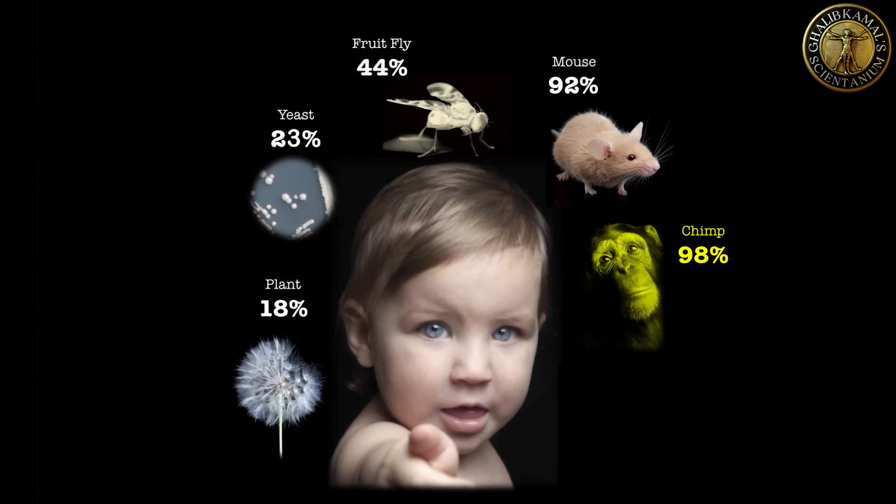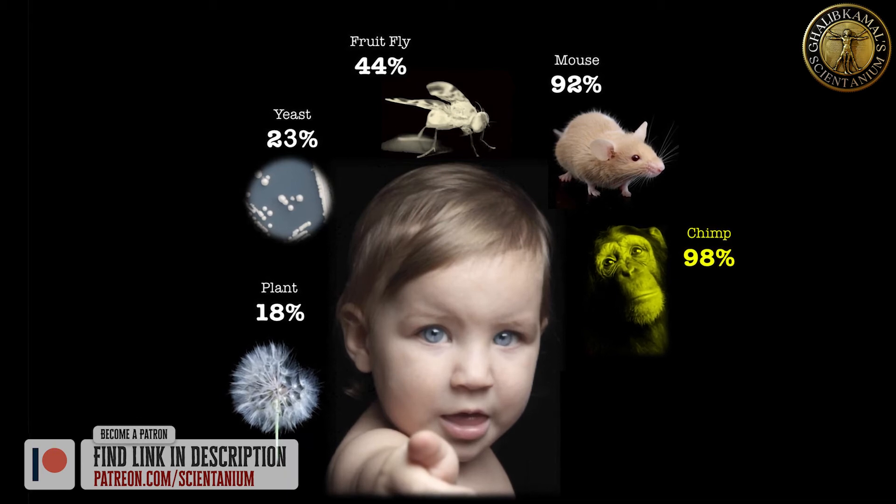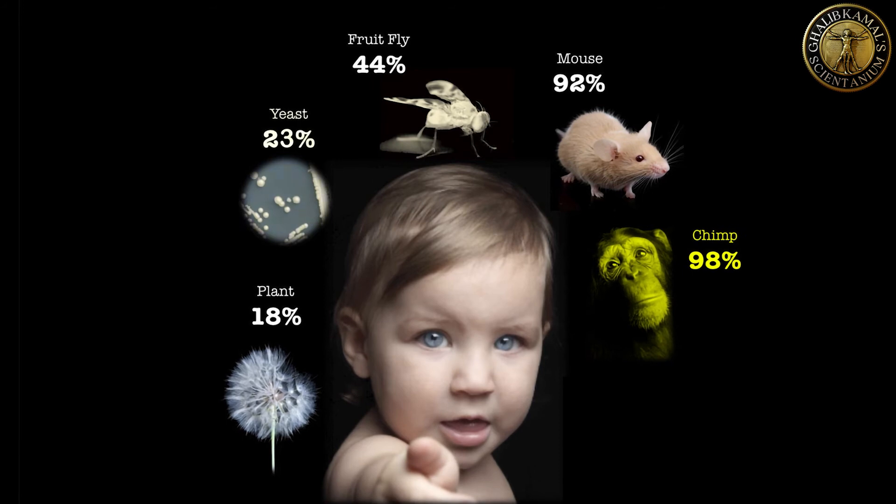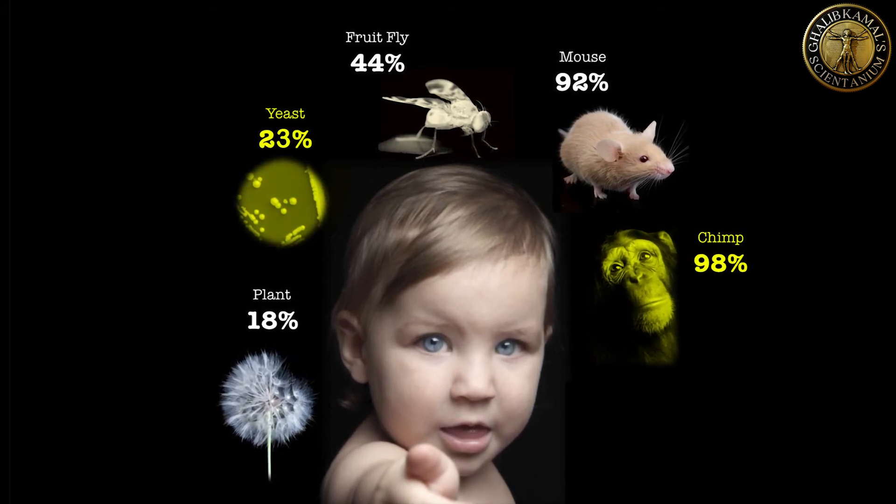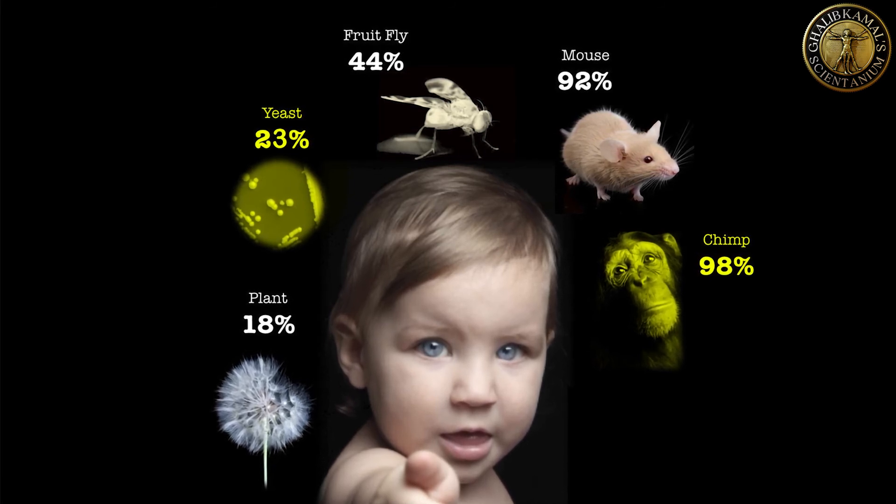It reduces from mammals, reptiles, fish and multicellular organisms to single cellular organisms. It falls to 23% with yeast, with whom we shared a common ancestor most probably billions of years ago.